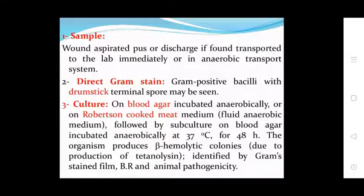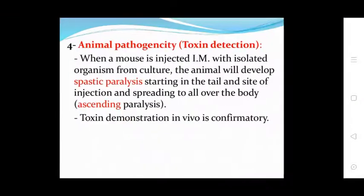Incubation at 37°C for 48 hours. The organism produces hemolytic colonies due to production of tetanolysin. Identification by Gram stain film and animal pathogenicity. Toxin detection: when a mouse is injected intramuscularly with the isolated organism from culture, the animal develops spastic paralysis starting at the tail and the side of injection, spreading to all over the body as ascending paralysis — toxin demonstration in vivo.